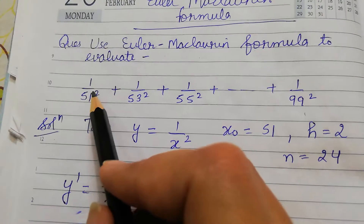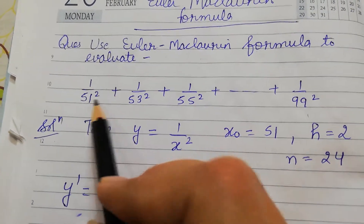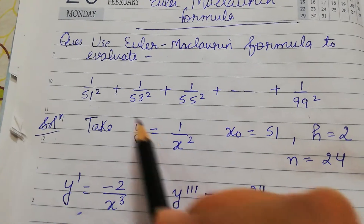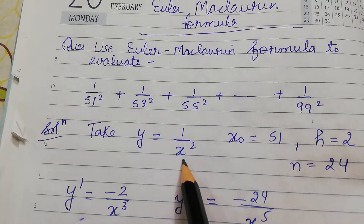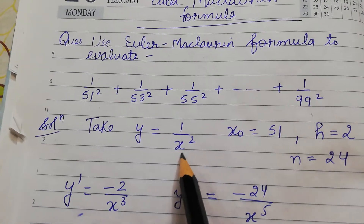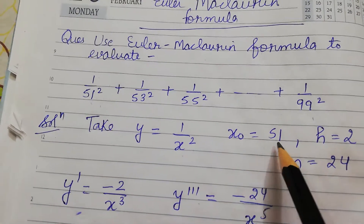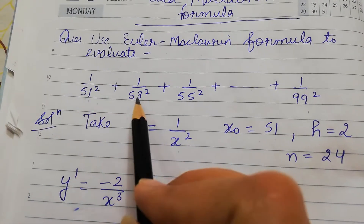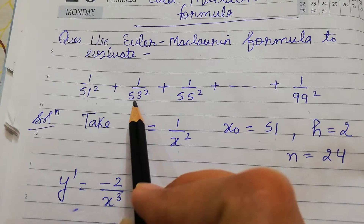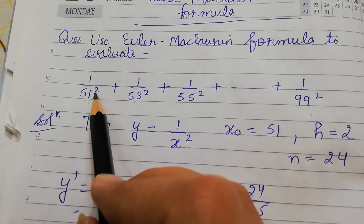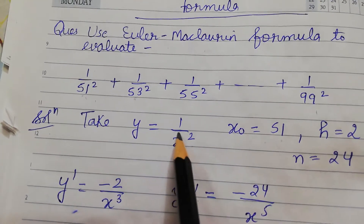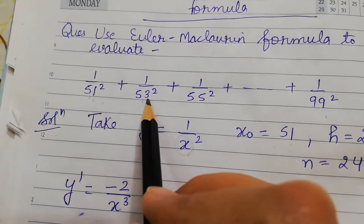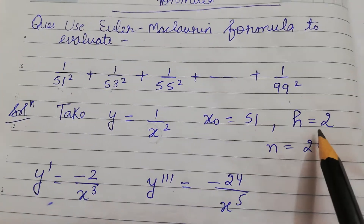The type of each term is 1 over variable squared, and the variable is changing. So our function y is 1/x². The starting value of x is 51, that is x₀ = 51. The difference between consecutive values is 2 (e.g., 53 − 51), so our h = 2.